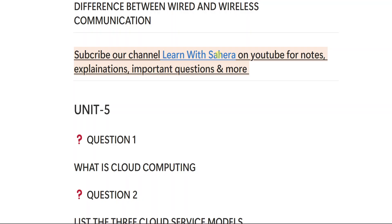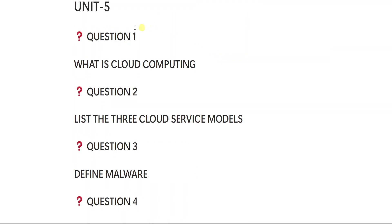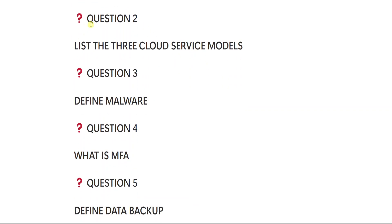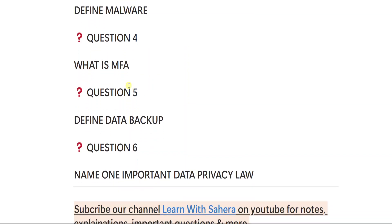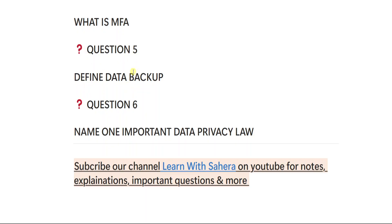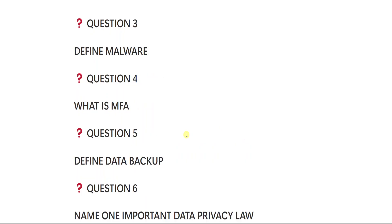From unit number five: one — what is cloud computing; two — list the three cloud service models; three — define malware; four — what is MFA; five — define data backup; six — name one important data privacy law. Those are the short important questions from each and every unit.